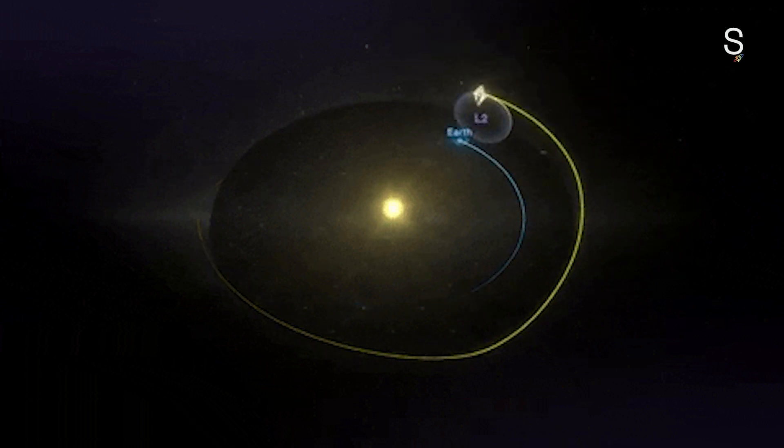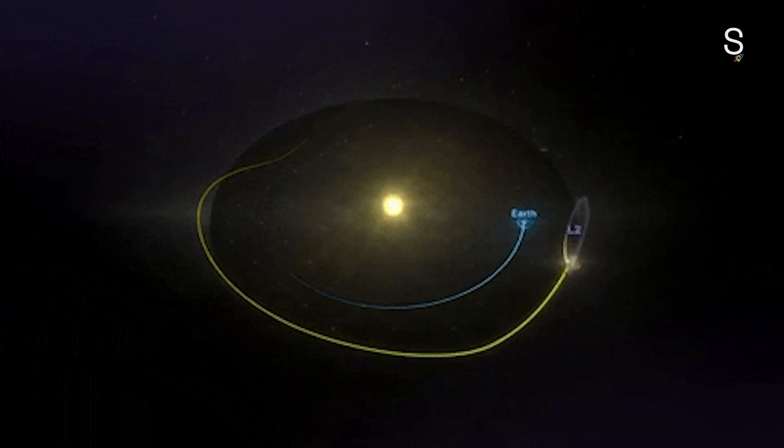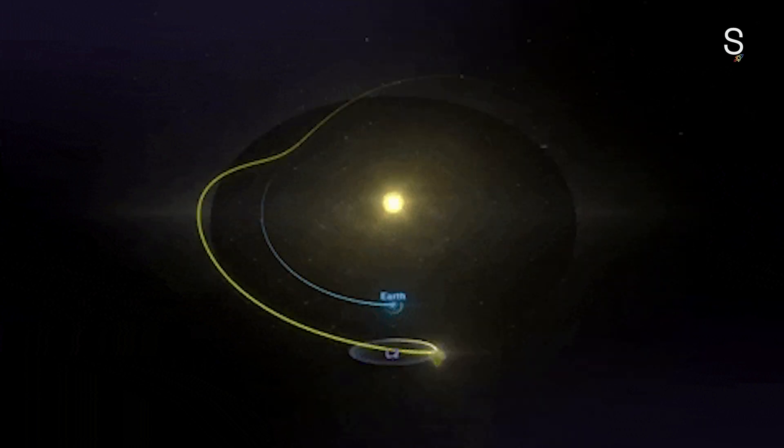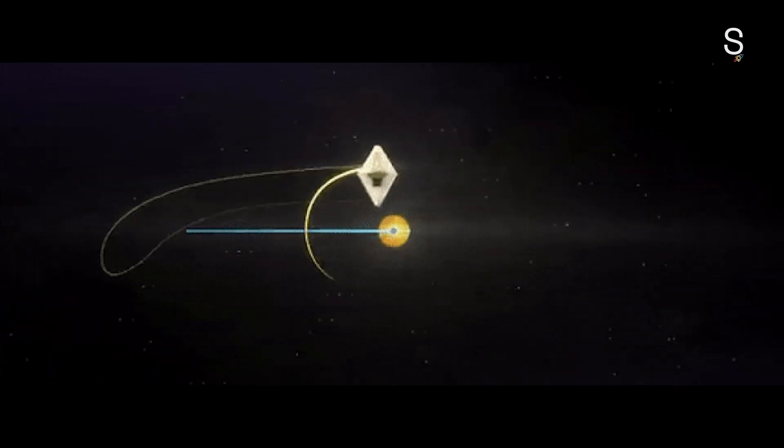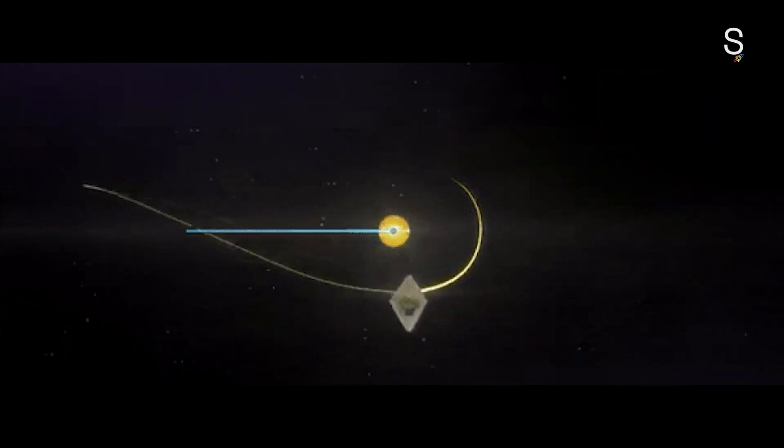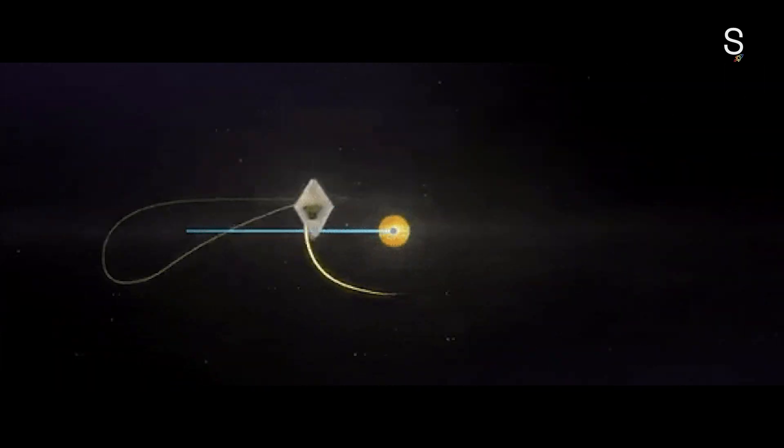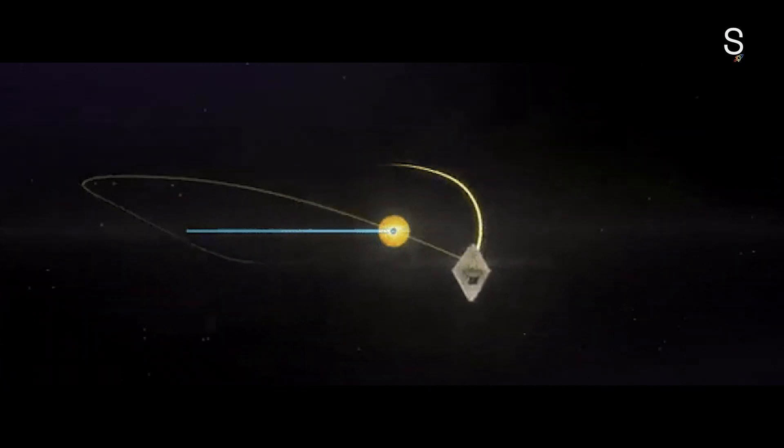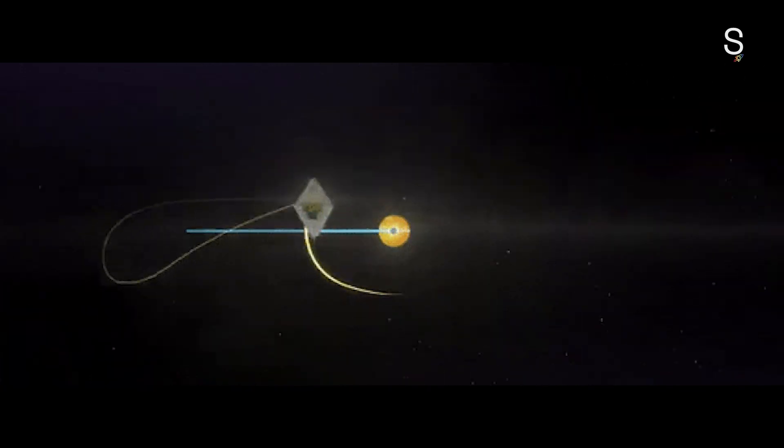The James Webb Space Telescope, which orbits the Sun at Earth's Lagrange point No. 2, is the most well-known example of how the National Aeronautics and Space Administration, or NASA, has utilized these Lagrange points. This enables the telescope to maintain its orbit around the Sun while remaining in alignment with Earth, so reducing the amount of fuel it needs to remain in that orbit.